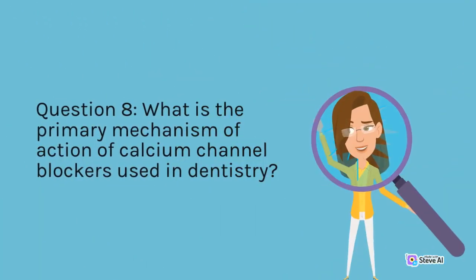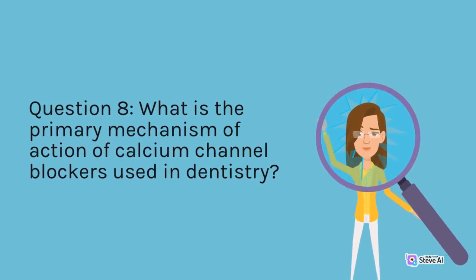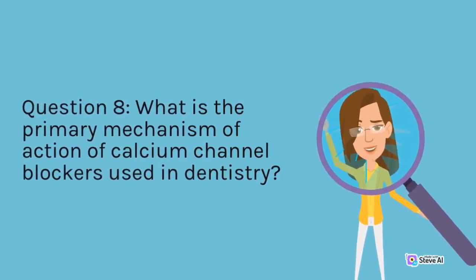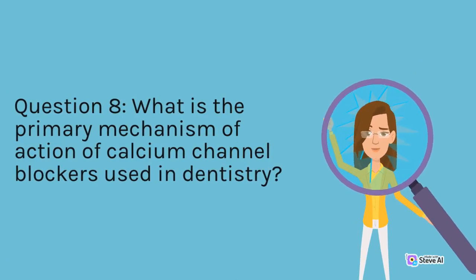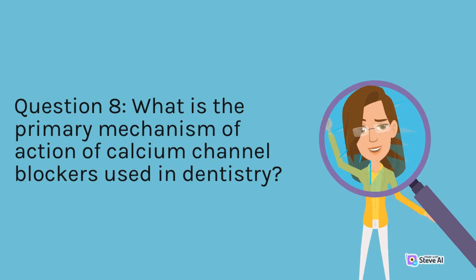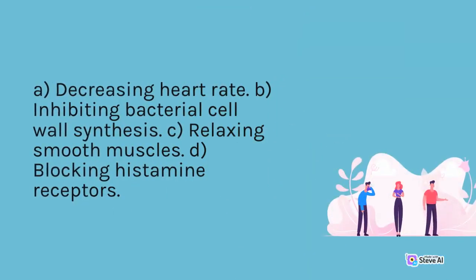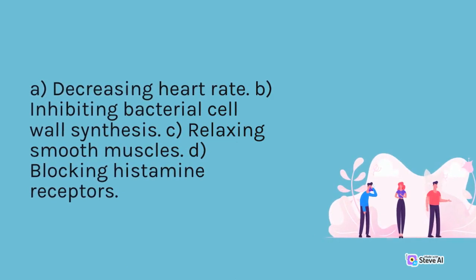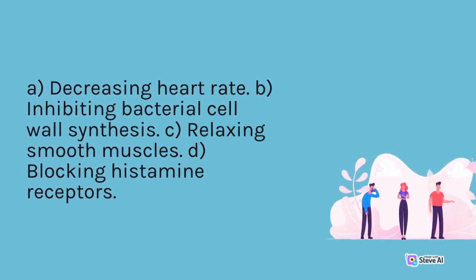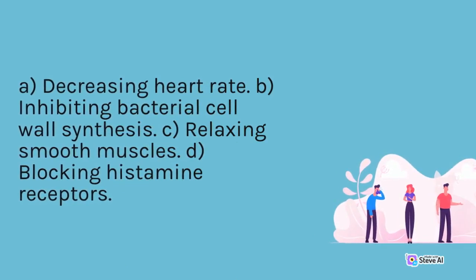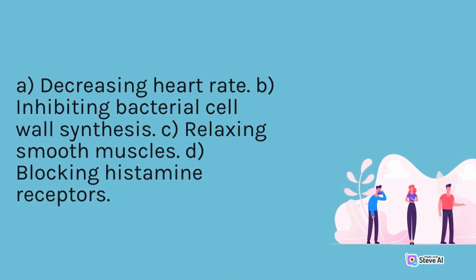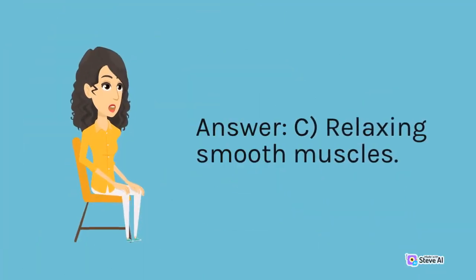Question 8. What is the primary mechanism of action of calcium channel blockers used in dentistry? A. Decreasing heart rate. B. Inhibiting bacterial cell wall synthesis. C. Relaxing smooth muscles. D. Blocking histamine receptors. Answer: C. Relaxing smooth muscles.